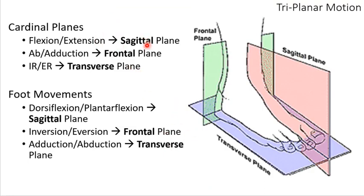When we look at the cardinal planes — sagittal, frontal, transverse — for everything else in the body, flexion and extension occur in the sagittal plane, abduction and adduction in the frontal plane, and internal/external rotation in the transverse plane. The foot also has a three-coordinate system with sagittal, frontal, and transverse planes, but the terminology is different. Although the movements may be the same with a single axis of rotation, because the foot is oriented 90 degrees from the rest of the body, we have slightly different movements, and the axes of rotation are not quite perpendicular to the planes.